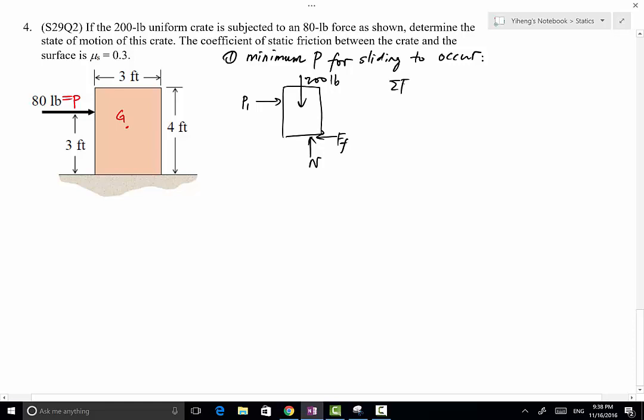So static equilibrium equations still apply at this critical instance when sliding is about to occur. So along the x direction we have P1 minus FF equals 0. Resultant force along the y direction equals N minus 200 equals 0. And because we are solving for the situation when sliding is about to occur, therefore the frictional force does equal to the maximum static friction, which can be evaluated by mu_s times N, which equals 0.3N, N being the normal force.